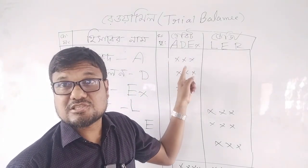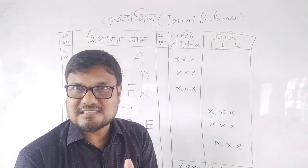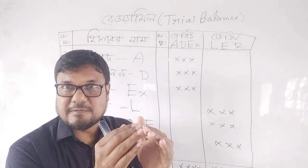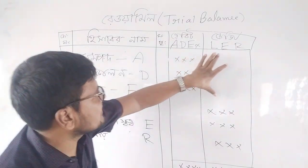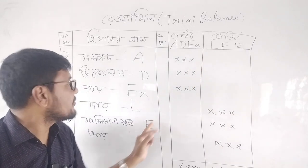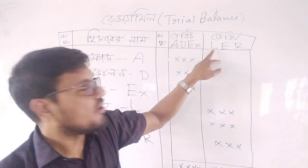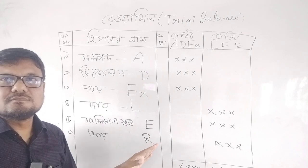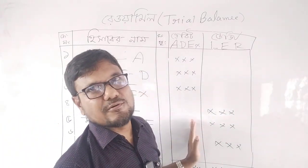Assets, drawings, and expenses will be on the debit side of trial balance. On the other hand, the credit side of trial balance includes liabilities, equity, and revenue. Liabilities, equity, and revenue will be included in the credit side of trial balance in accounting.